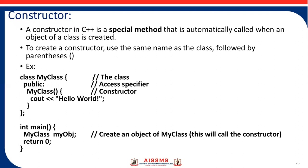Next is the constructor. A constructor in a class is a special method that is automatically called when an object of a class is created. To create a constructor, use the same name as the class followed by parentheses. For example, class MyClass with public access modifier and a constructor named MyClass, because the constructor name must be the same as the class name.